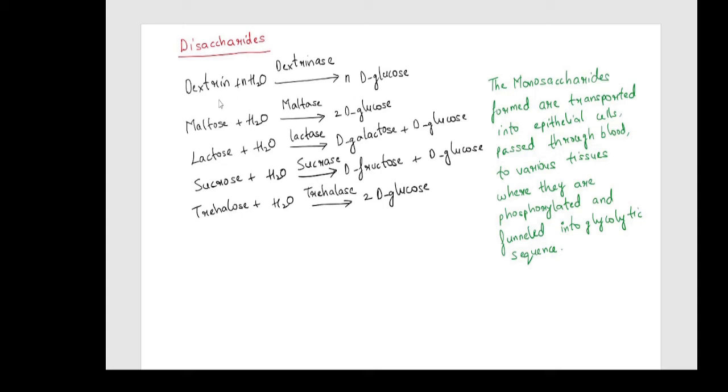Dextrinase acts on dextrin to produce D-glucose. Maltase acts on maltose to give two units D-galactose and D-glucose each.